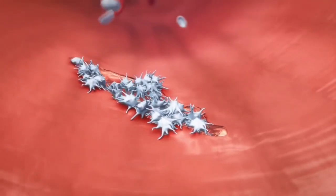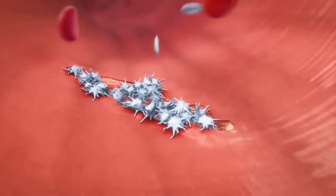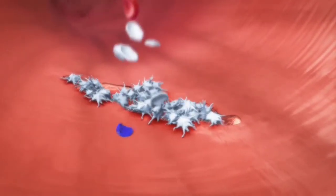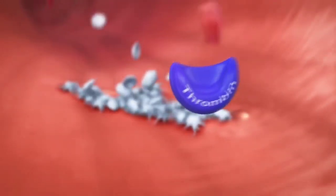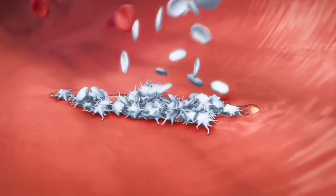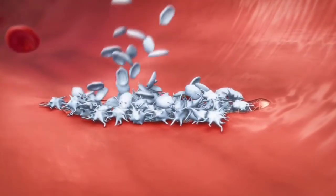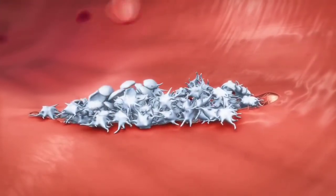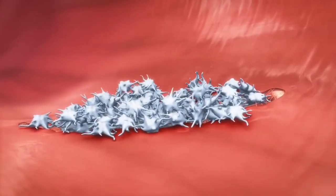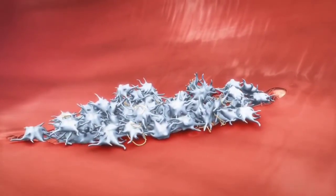Activated platelets also trigger the coagulation cascade and thus the formation of thrombin. Thrombin, in turn, stimulates platelet activation even further, a continuous feedback loop. Additionally, thrombin induces the formation of fibrin for the mesh stabilizing the clot.